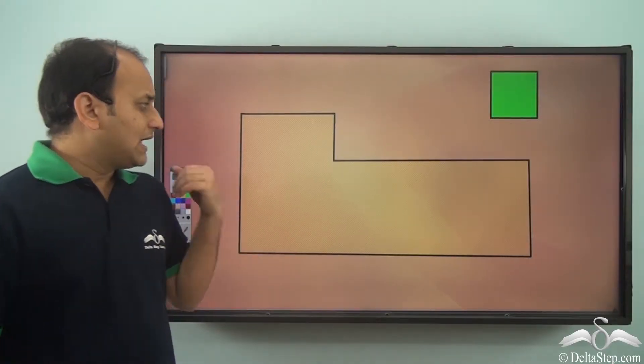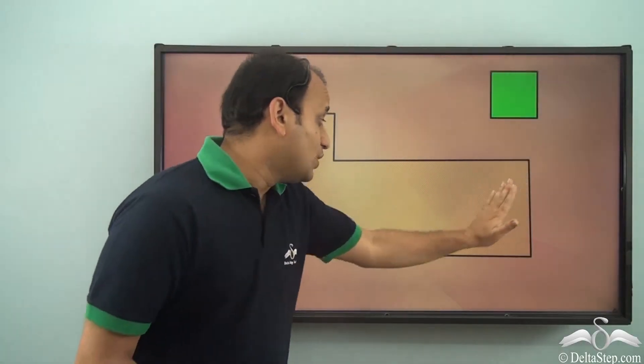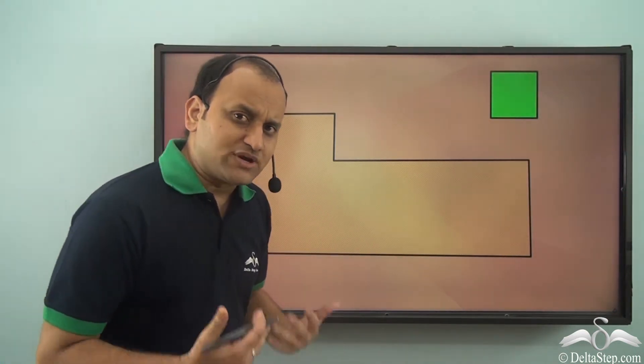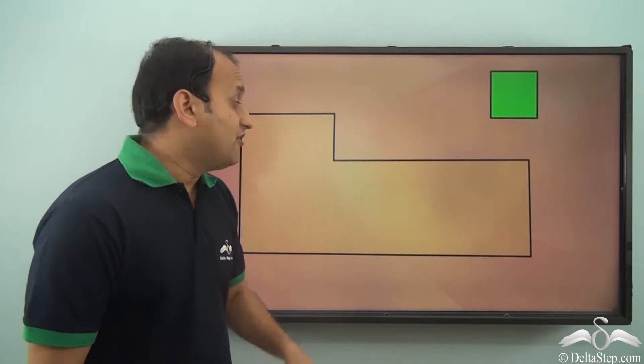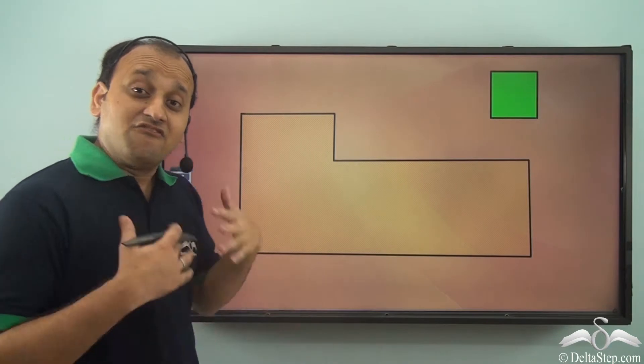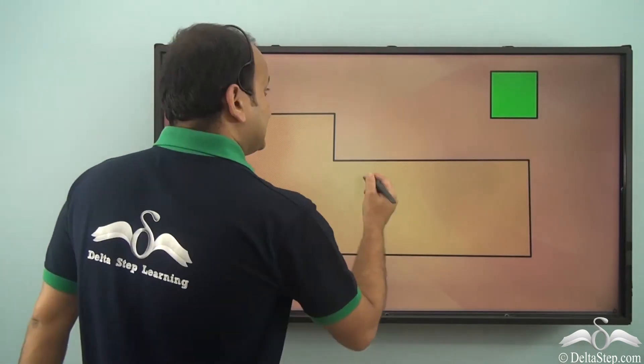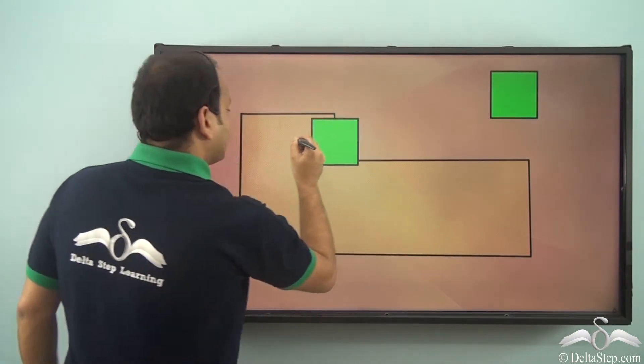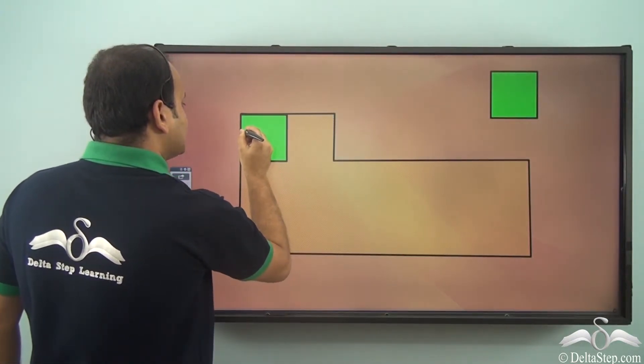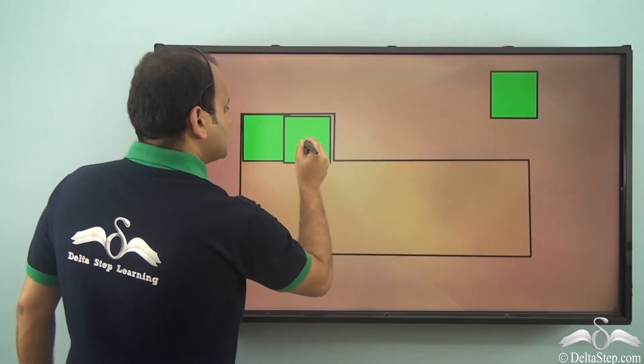Now we have this shape here and we need to calculate the amount of space which this particular shape occupies. So what do we need to calculate exactly? Well we need to calculate the area of this shape. So whenever you need to calculate space occupied by a shape, it is nothing but area of the shape. So let us start calculating using these square tiles again.